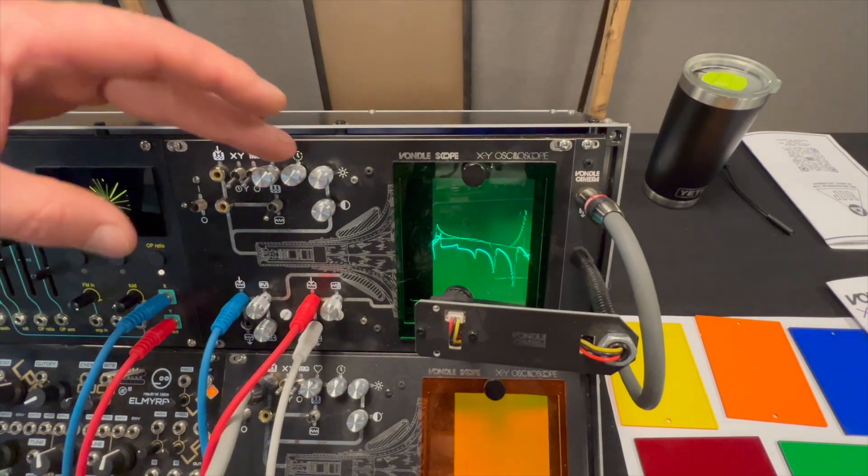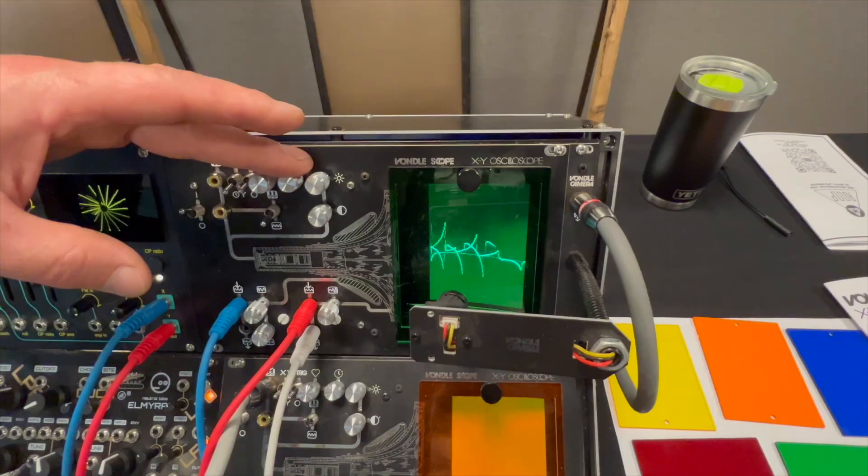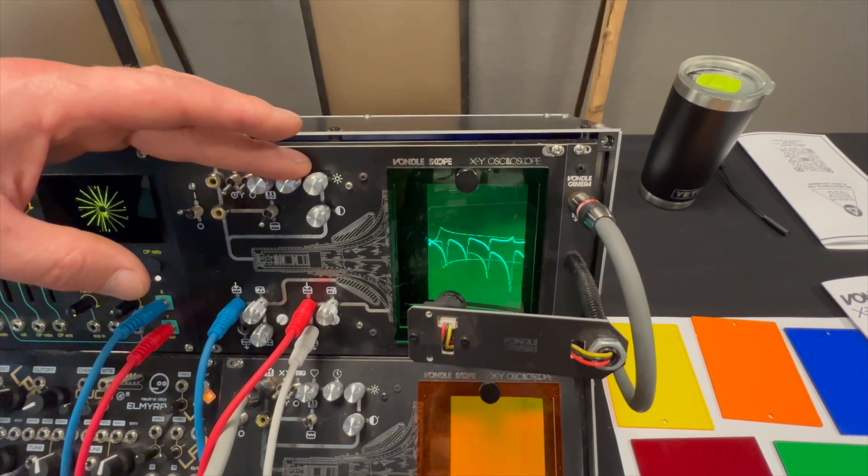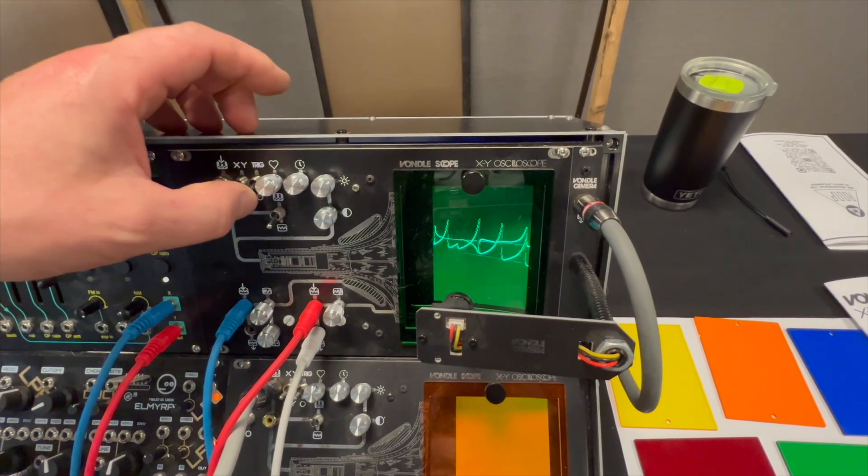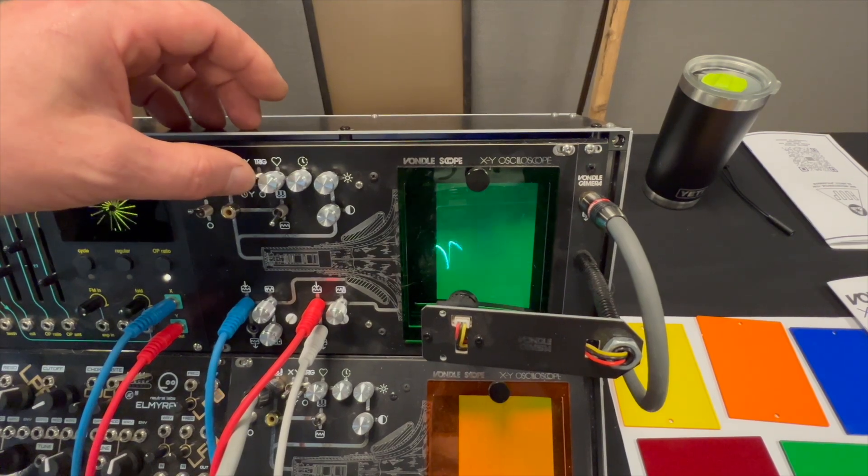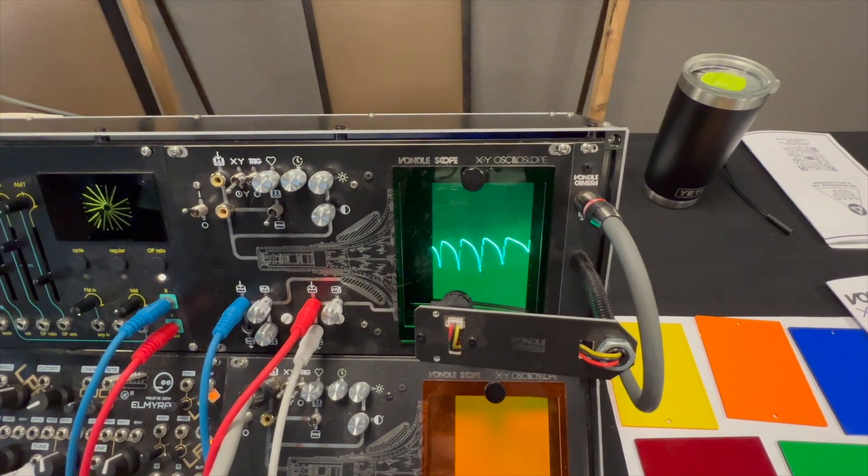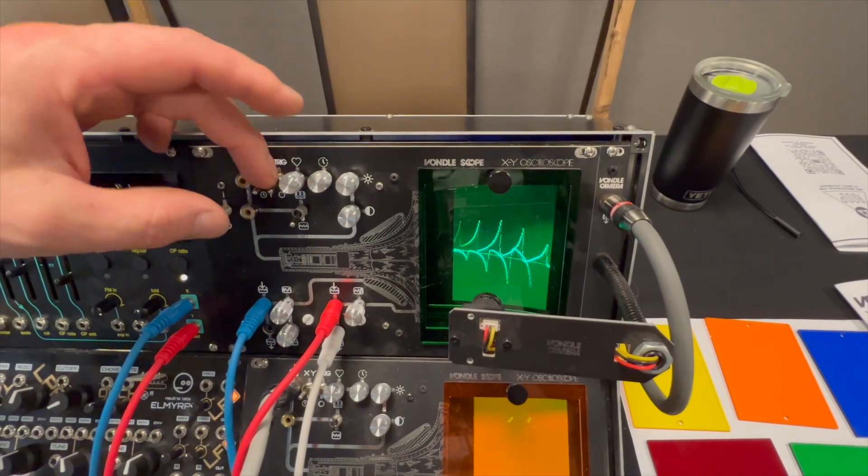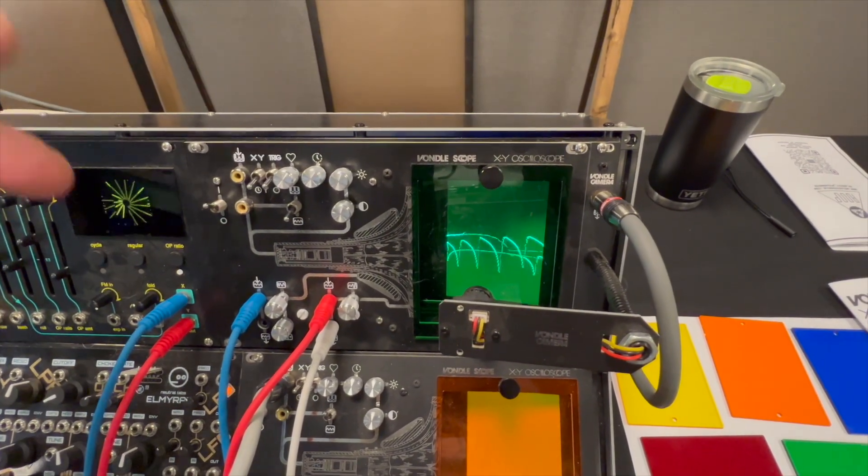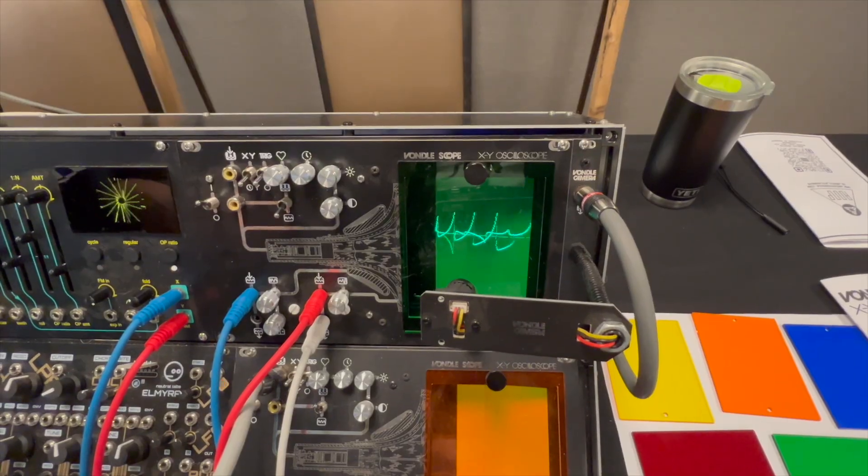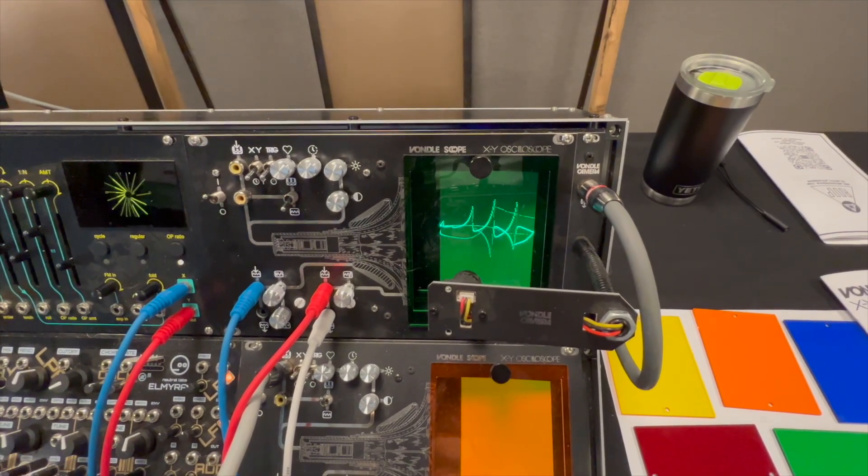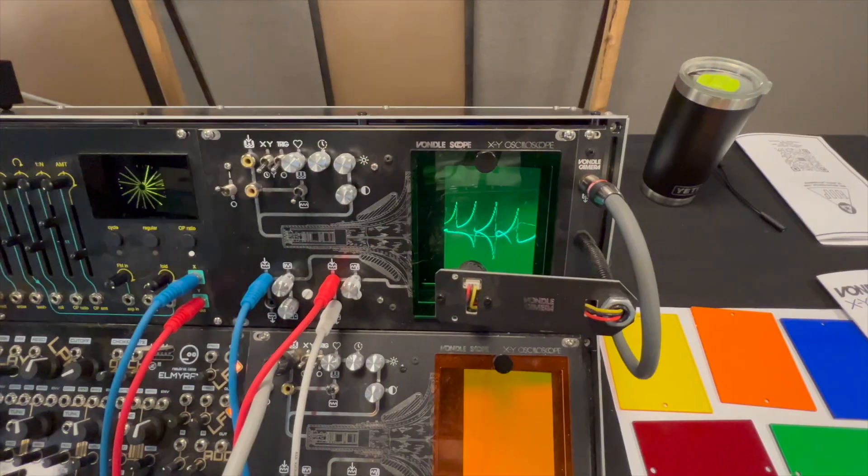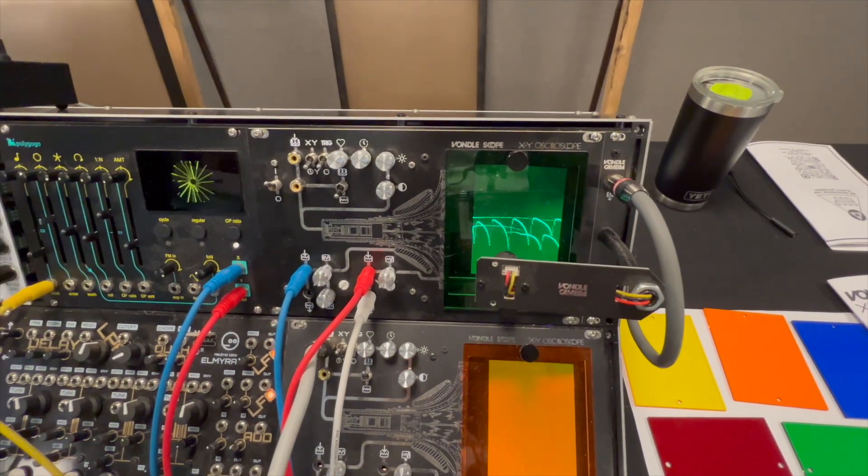You can change things like the time base so you can try to get it to sync up there. But there's a trigger so you can turn that trigger on and see what that looks like triggered. It's not overwriting itself. If you take the trigger off you're looking at multiple versions of it mapped over itself. That's the basics of the scope side.